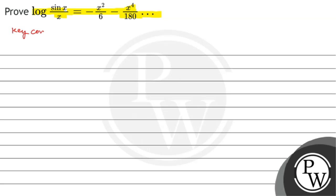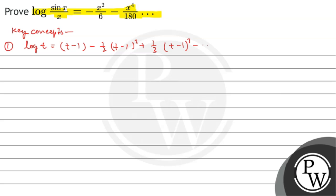To solve this, the key concepts we will use are: first, the Taylor series of log(t), given by (t minus 1) minus half (t minus 1) squared plus one-third (t minus 1) cubed minus so on. Second, the Taylor expansion of sine x divided by x, which equals 1 minus x squared divided by 6 plus x to the power 4 divided by 120 minus so on.